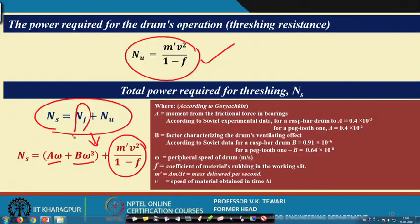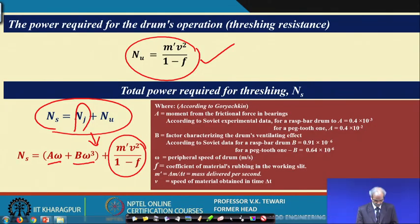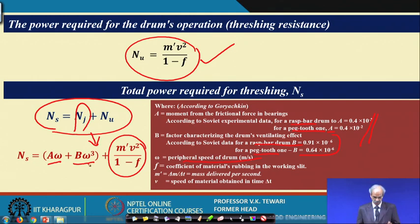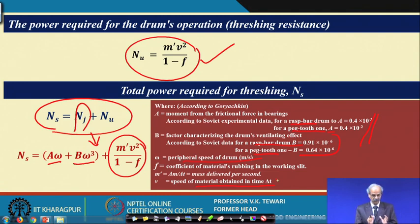The values of A and B for a rasp bar type drum and a peg tooth type drum are provided in a table. Note again that ω here is the peripheral velocity in meters per second, not radians per second, and V is the speed of the material obtained in time Δt. This completes the total power requirement for the drum.